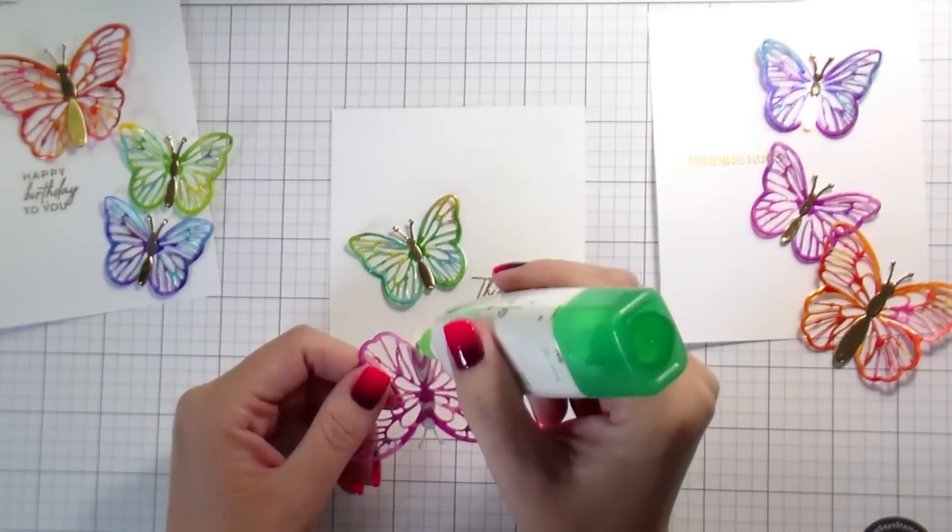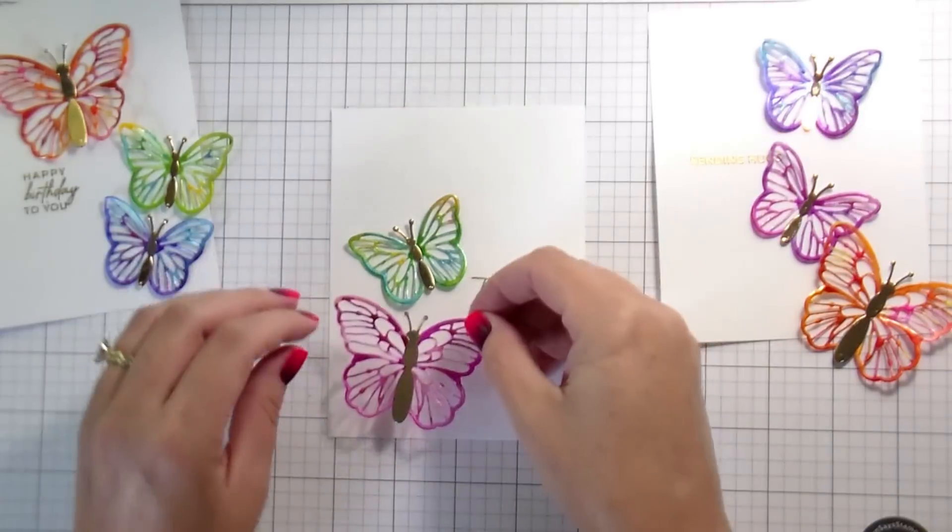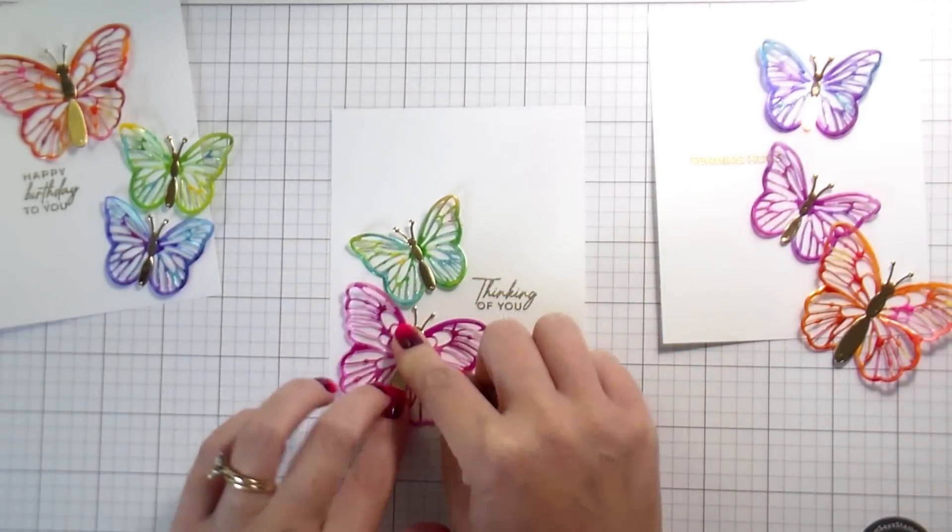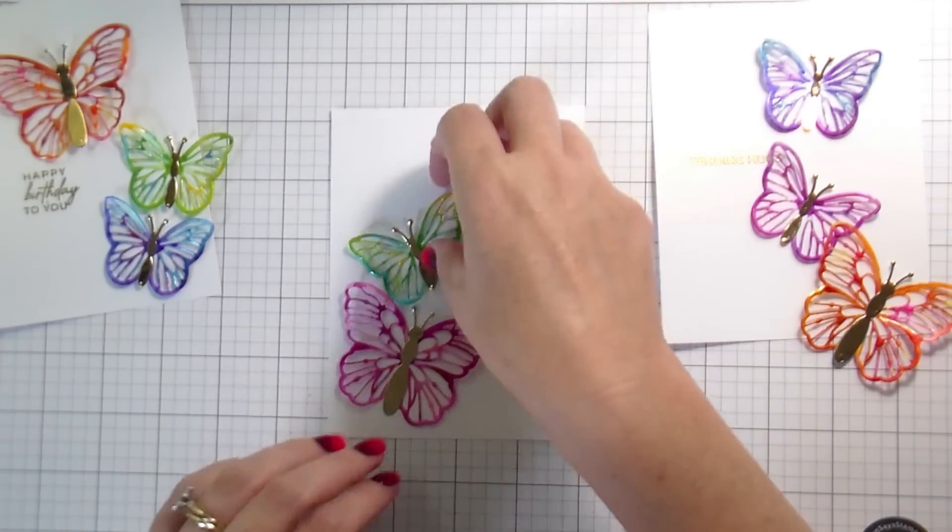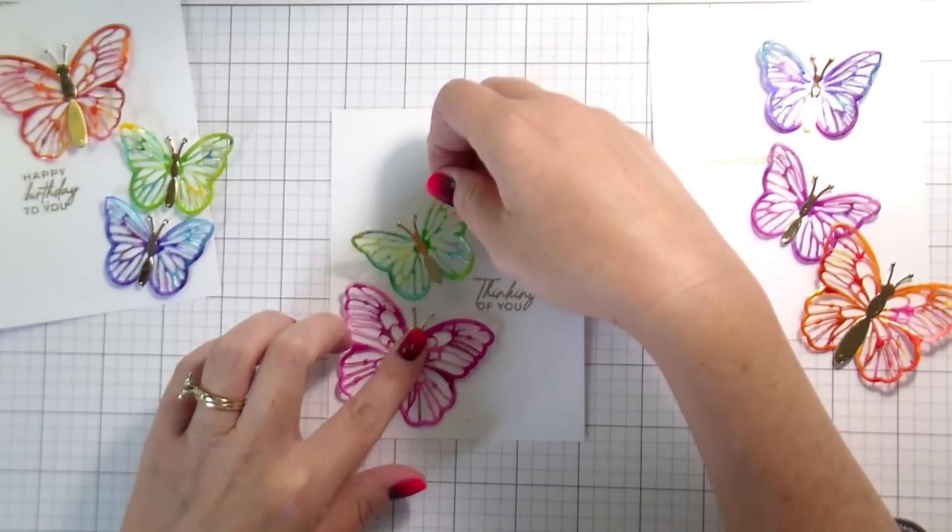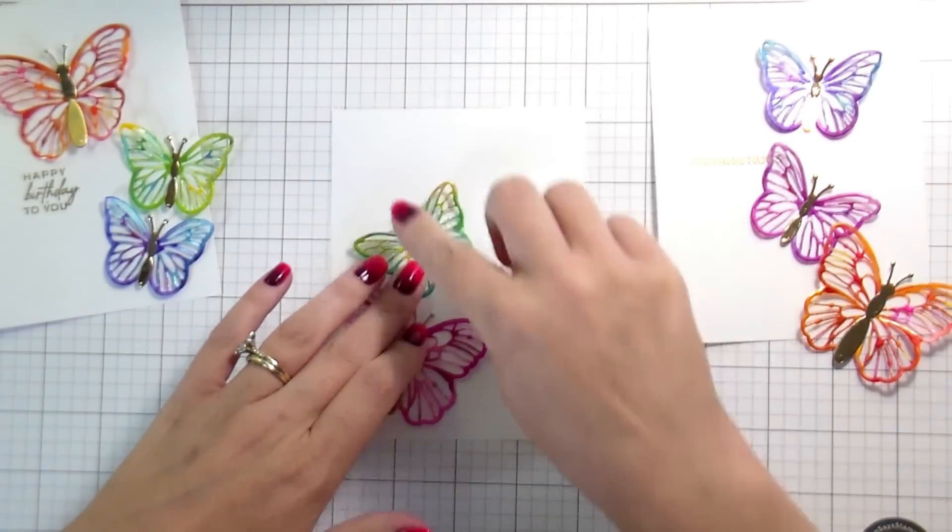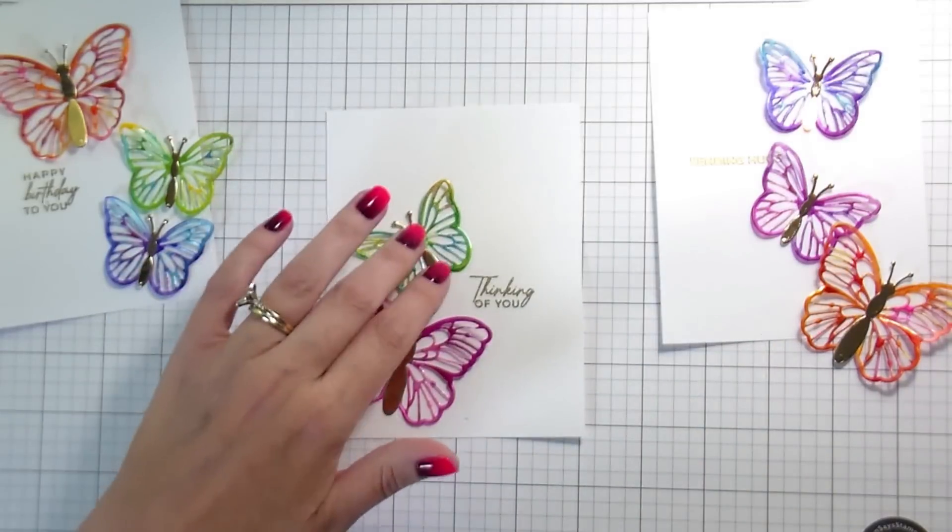So just make sure you keep any sticky fingers or any tape or anything like that away from it because it may pull up your color, just like if you were hot foiling. So with that said, going to build these cards. The only other thing that I added was a couple of rhinestones just to kind of fill in some gaps and lead your eye around the card.